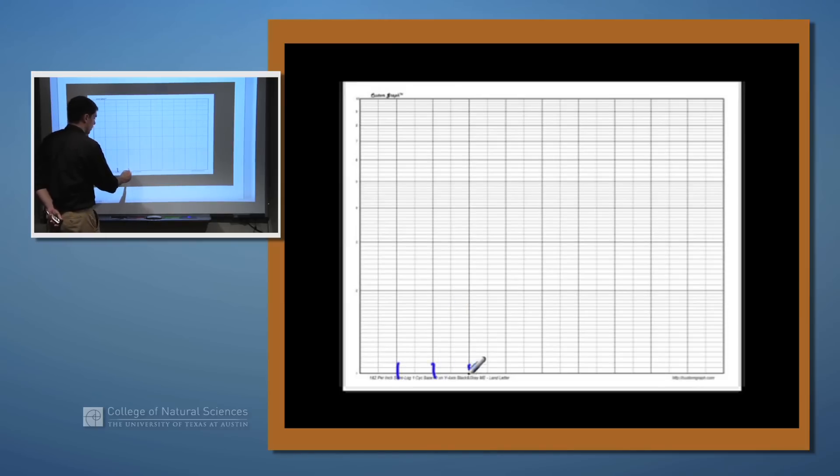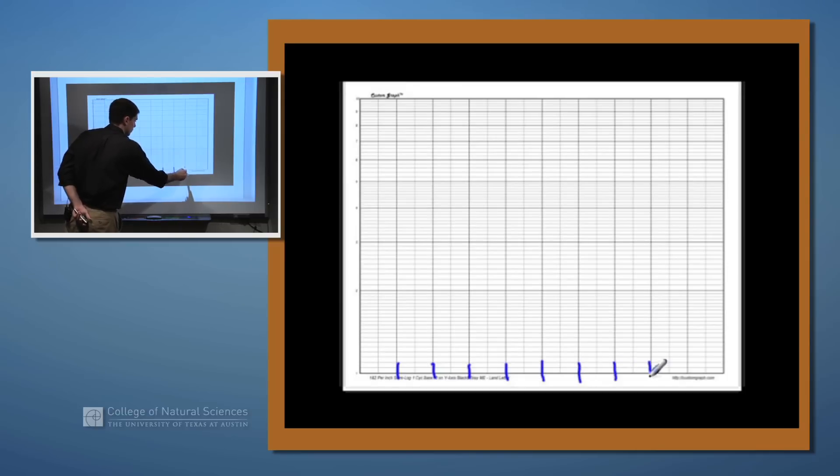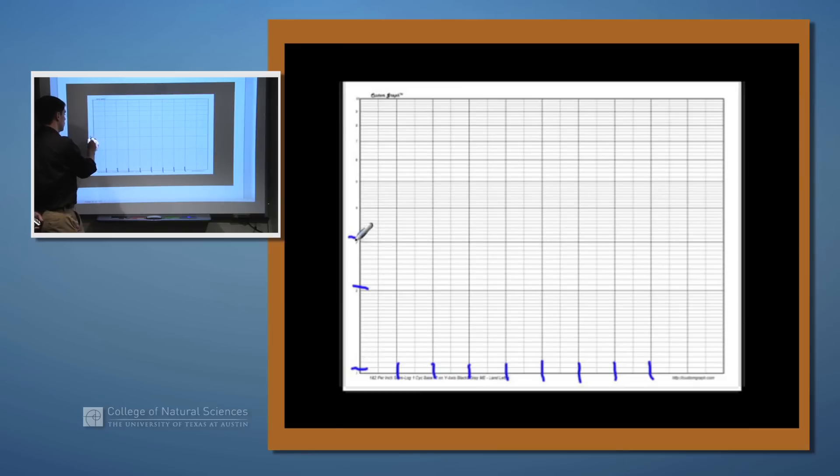You'll notice that on the bottom the x-axis is linear, so this is where we get the linear part of the semi-log paper. And down here we start with 1, goes to 2, 3, 4, 5, 6, 7, 8, 9, and eventually into 10.